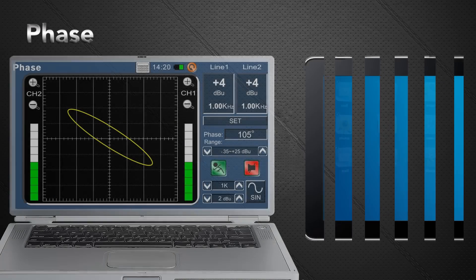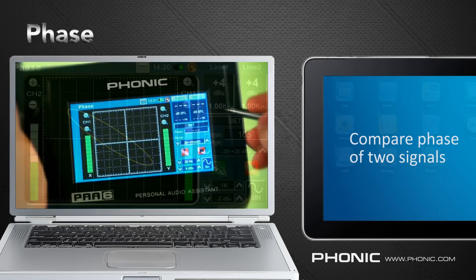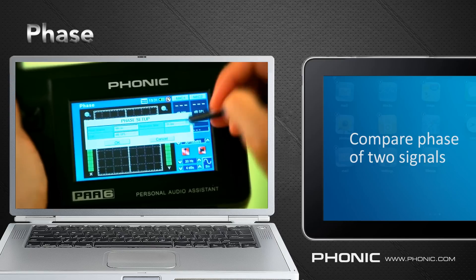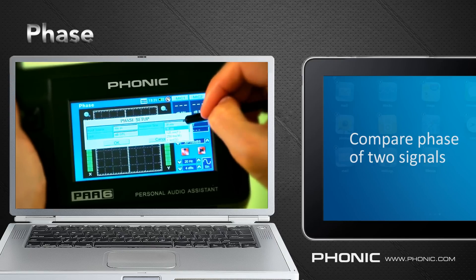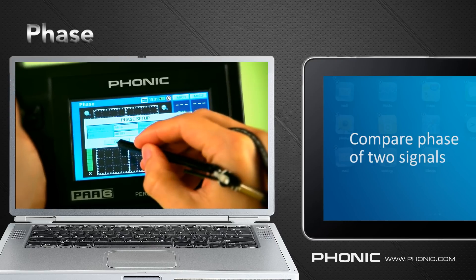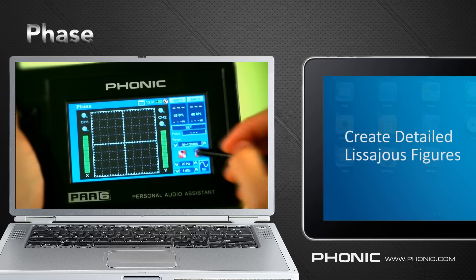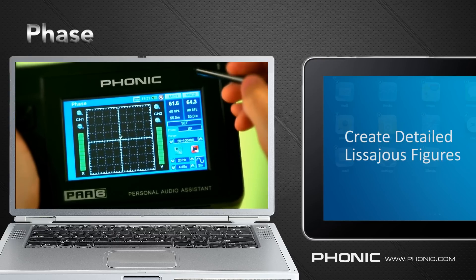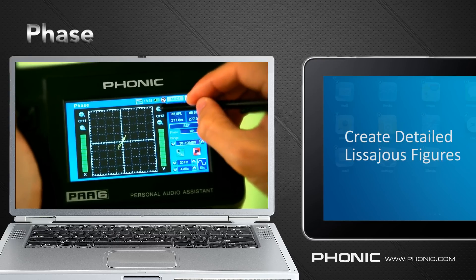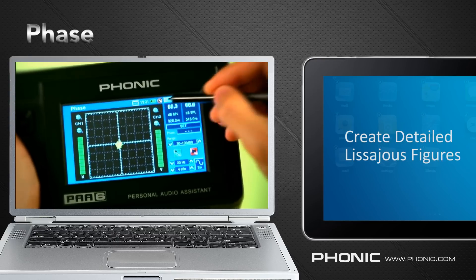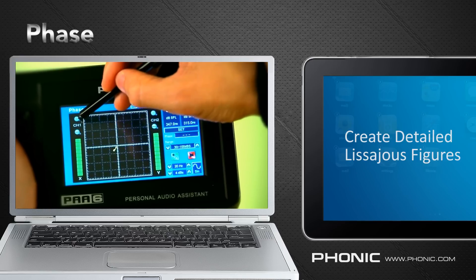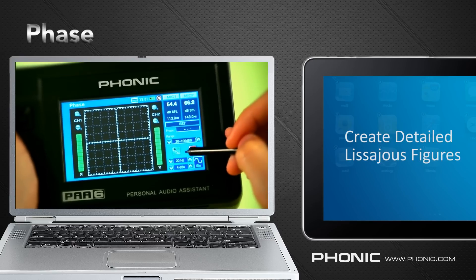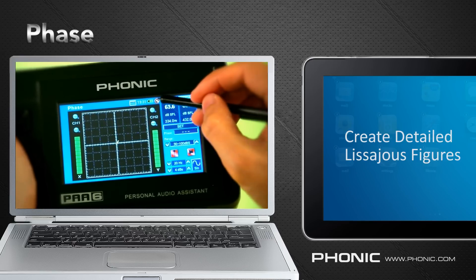The next function is phase. This allows us to compare the phase between two different signals. Because the PAA6 is stereo oriented, it helps us to create detailed Lissajous curves on screen. This enables us to see the audio as it's heard, whether it's a guitar, piano or other sound.